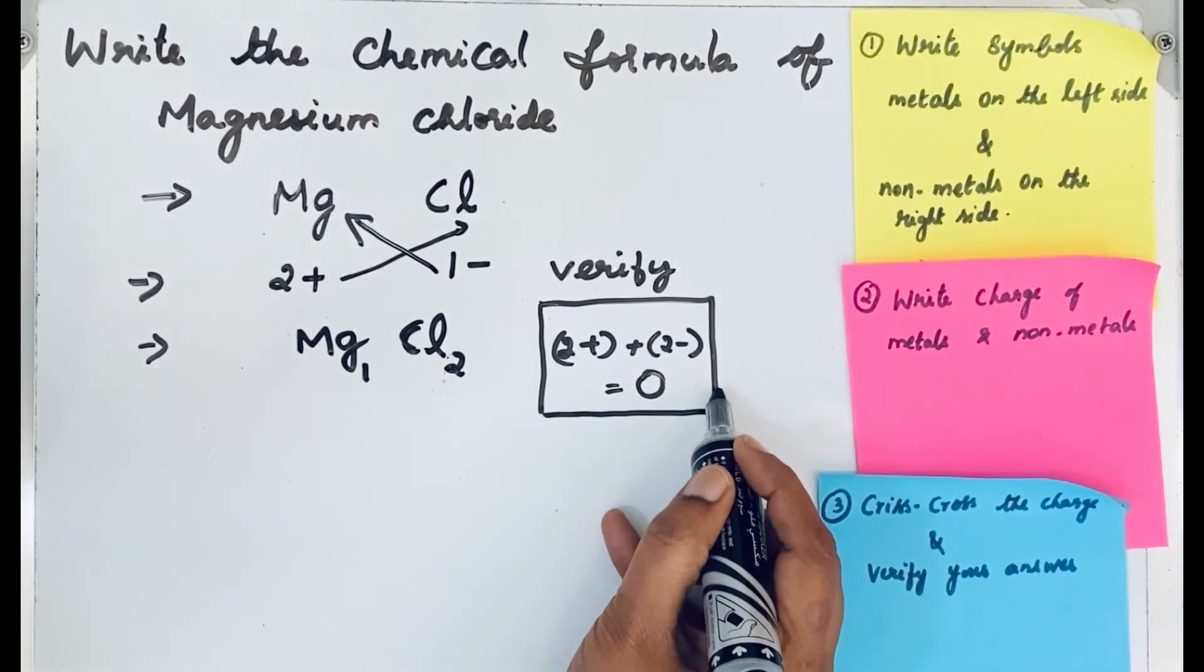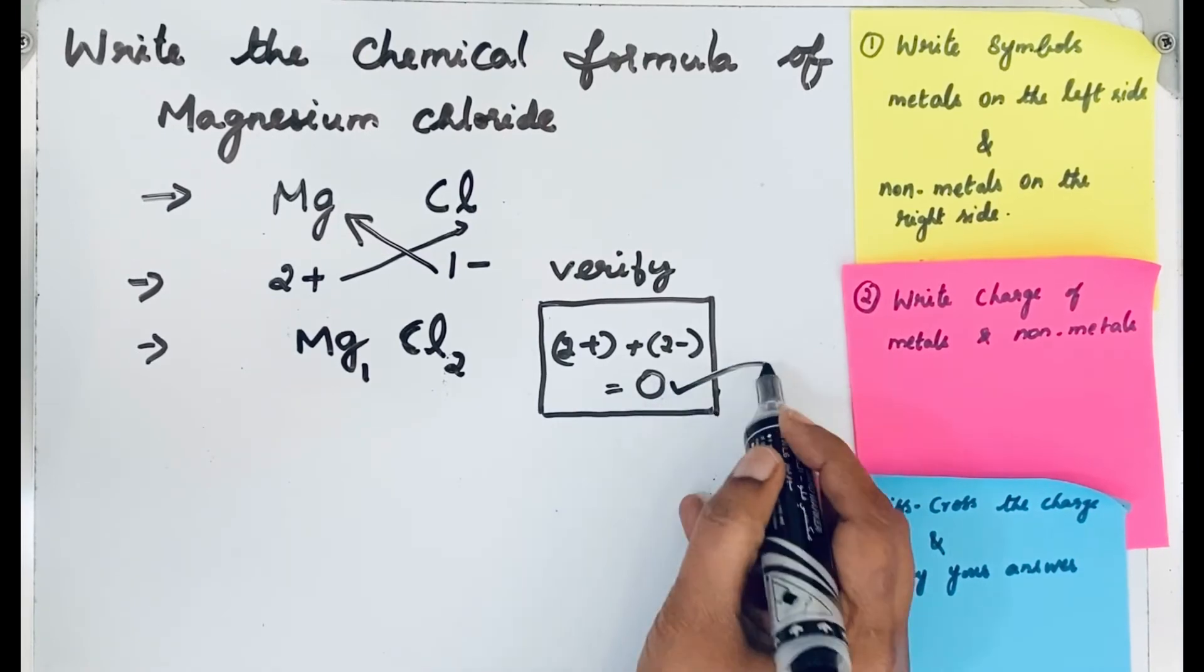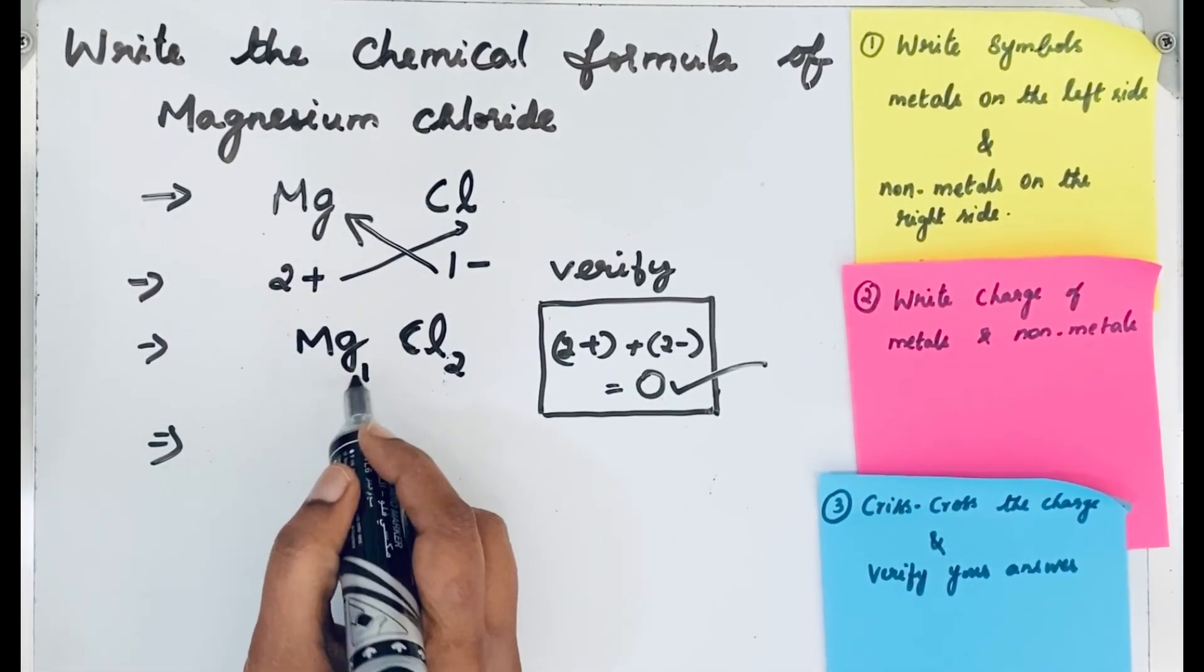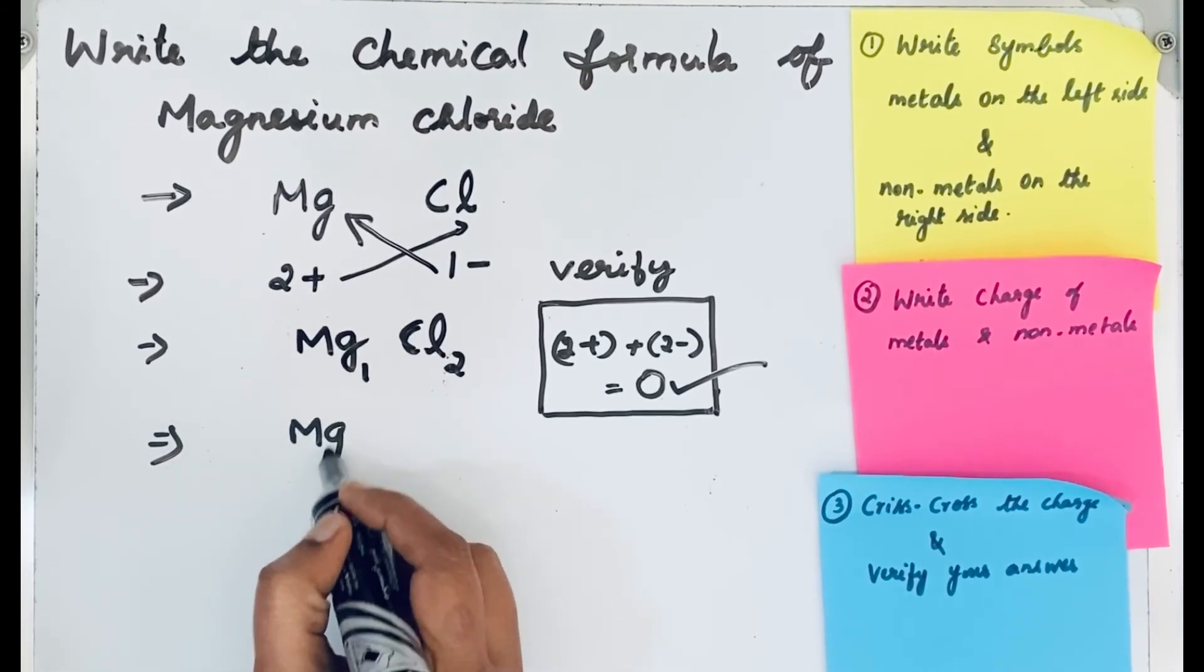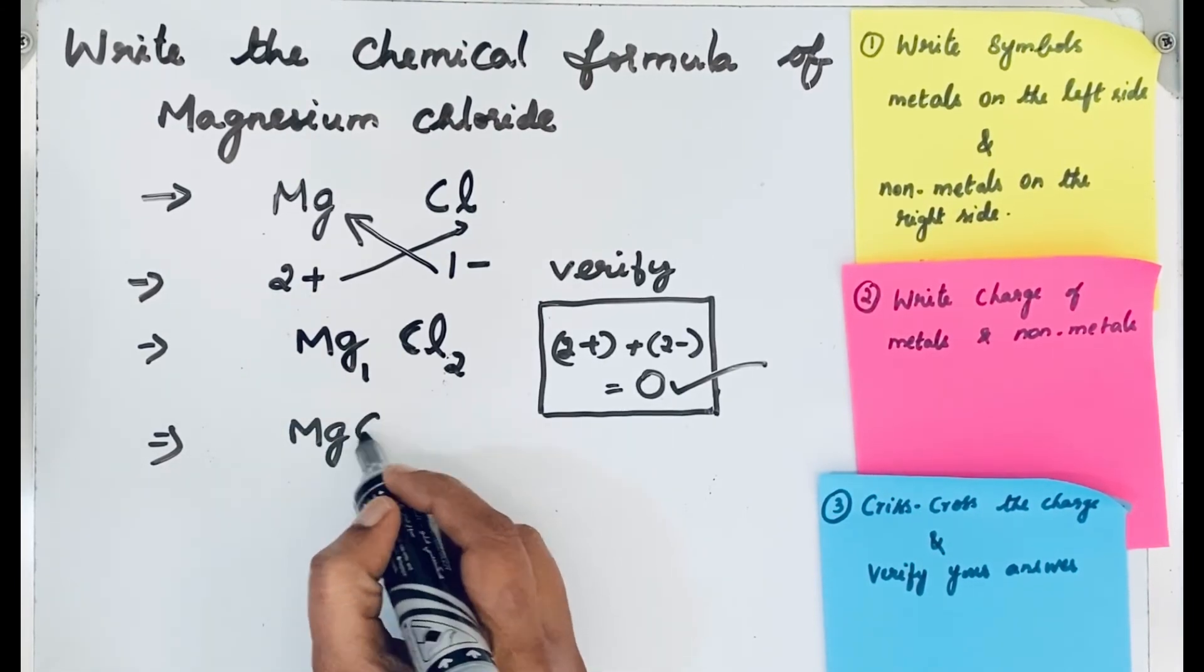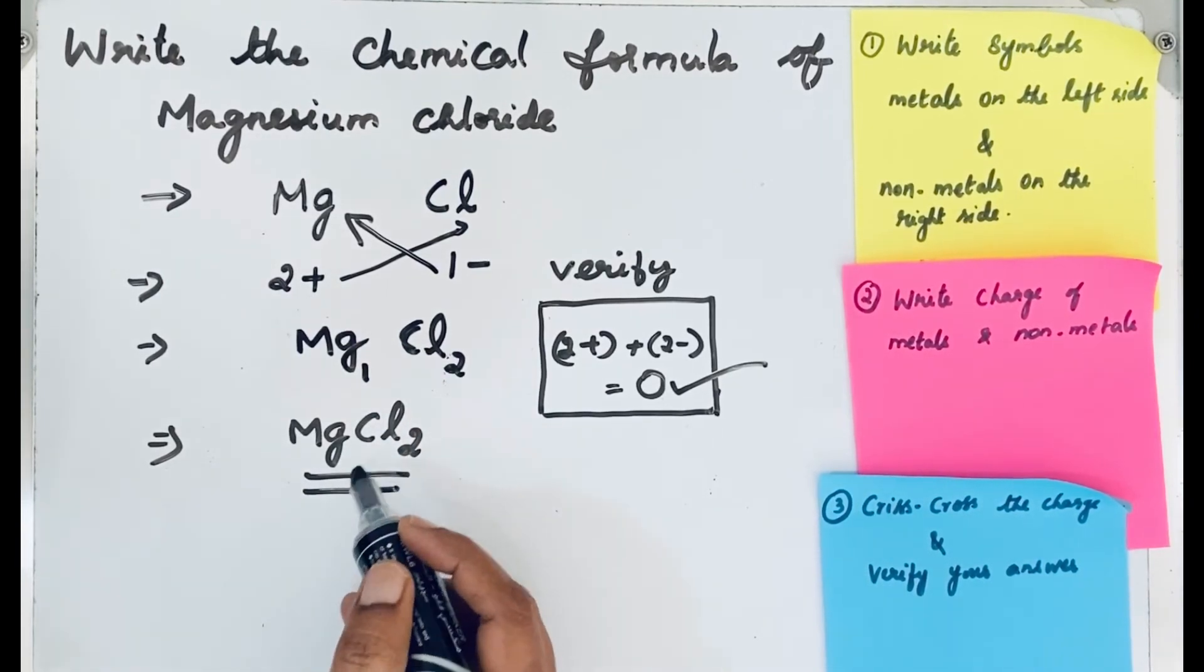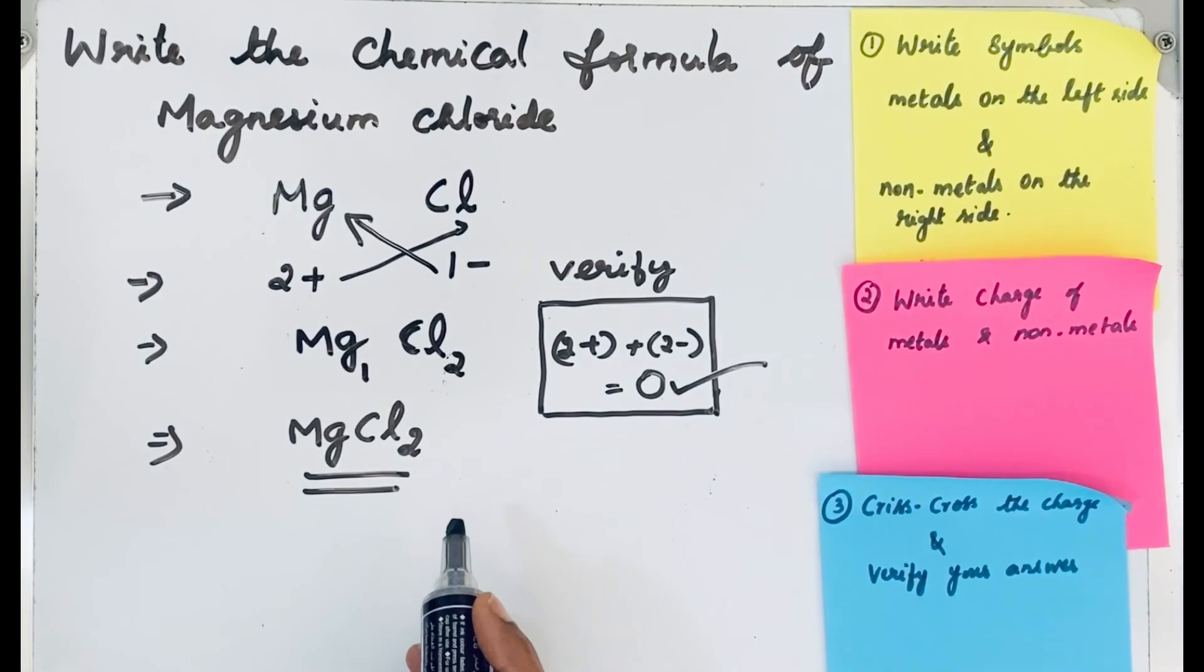If you get 0, that means the compound is neutral, then your answer is correct. We are not mentioning 1 as a subscript, so we can write it like MgCl₂. MgCl₂ is the formula of magnesium chloride. Thanks for watching.